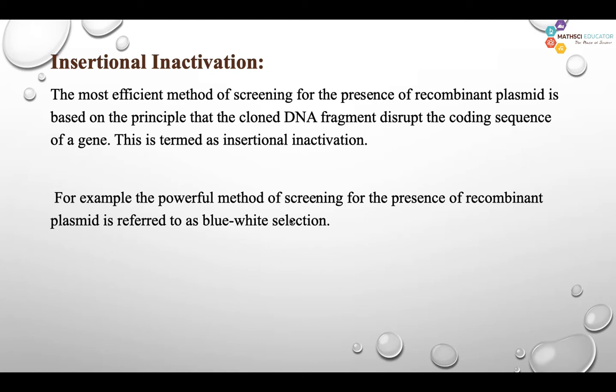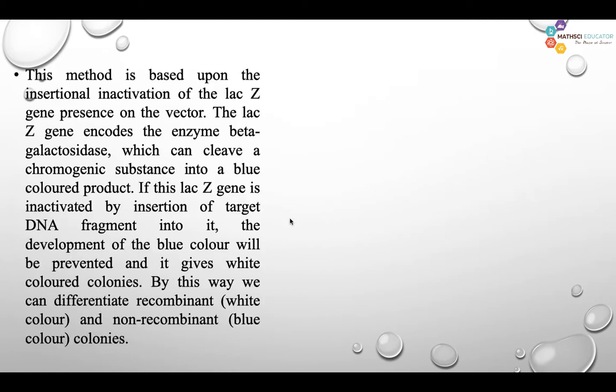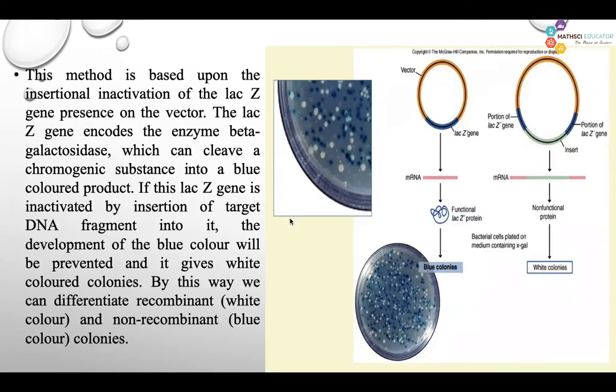The powerful method of screening for the presence of recombinant plasmid is blue-white selection. This method is based upon the insertional inactivation of the lacZ gene.